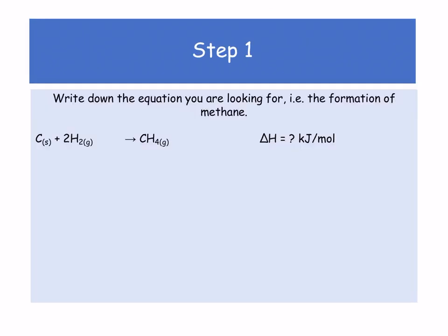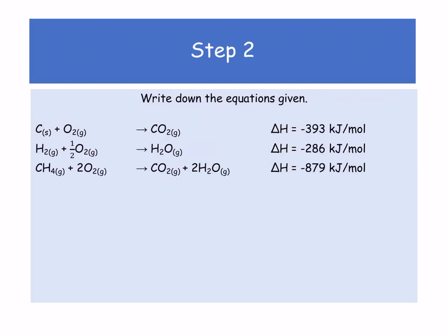Take your time with this — watch the video two or three times until you understand. The first thing we want is the equation for the formation of methane. We don't know what its formation is; that's what the question is asking for. We know that carbon plus 2H2 gives us CH4 — that is the formation of methane. Part 2: we write down the equations that are given. You're already starting to pick up that your methane, in the third equation, is on the wrong side. So we're going to have to flip that.